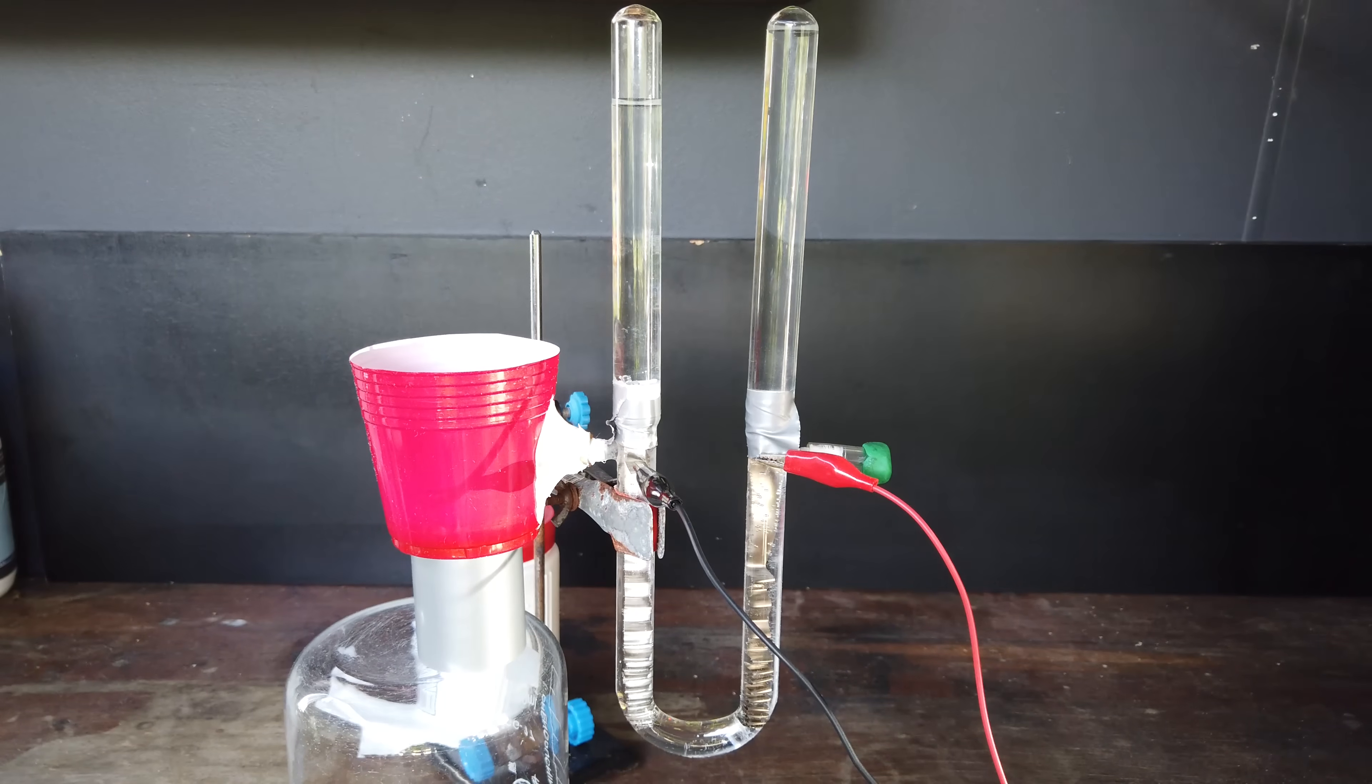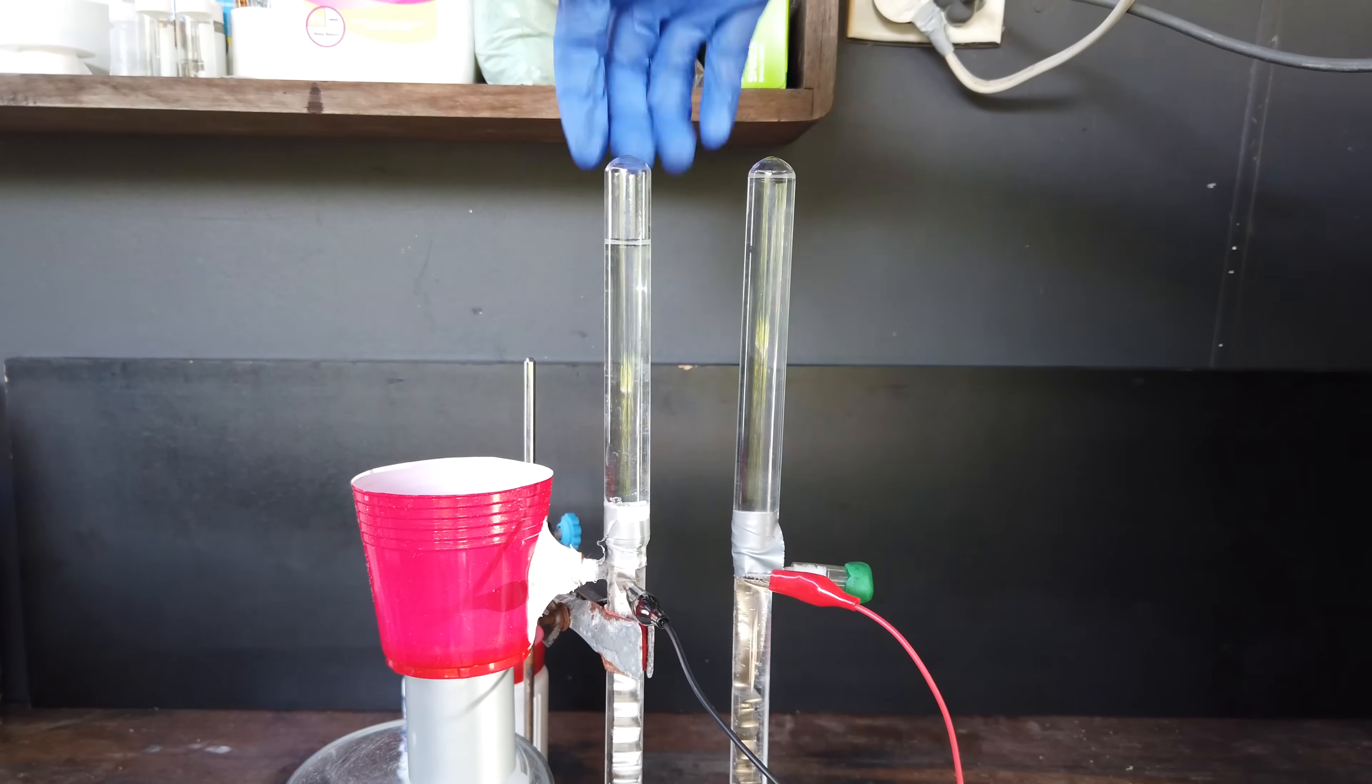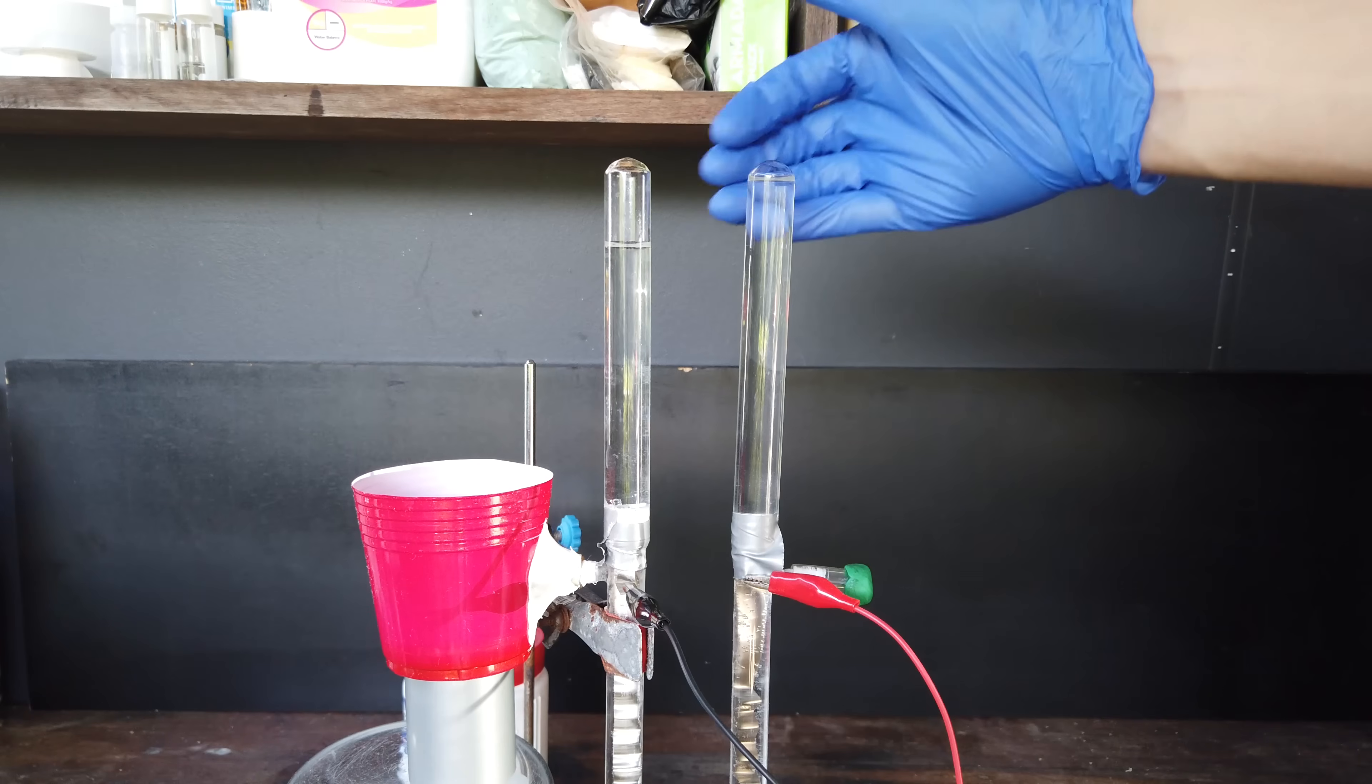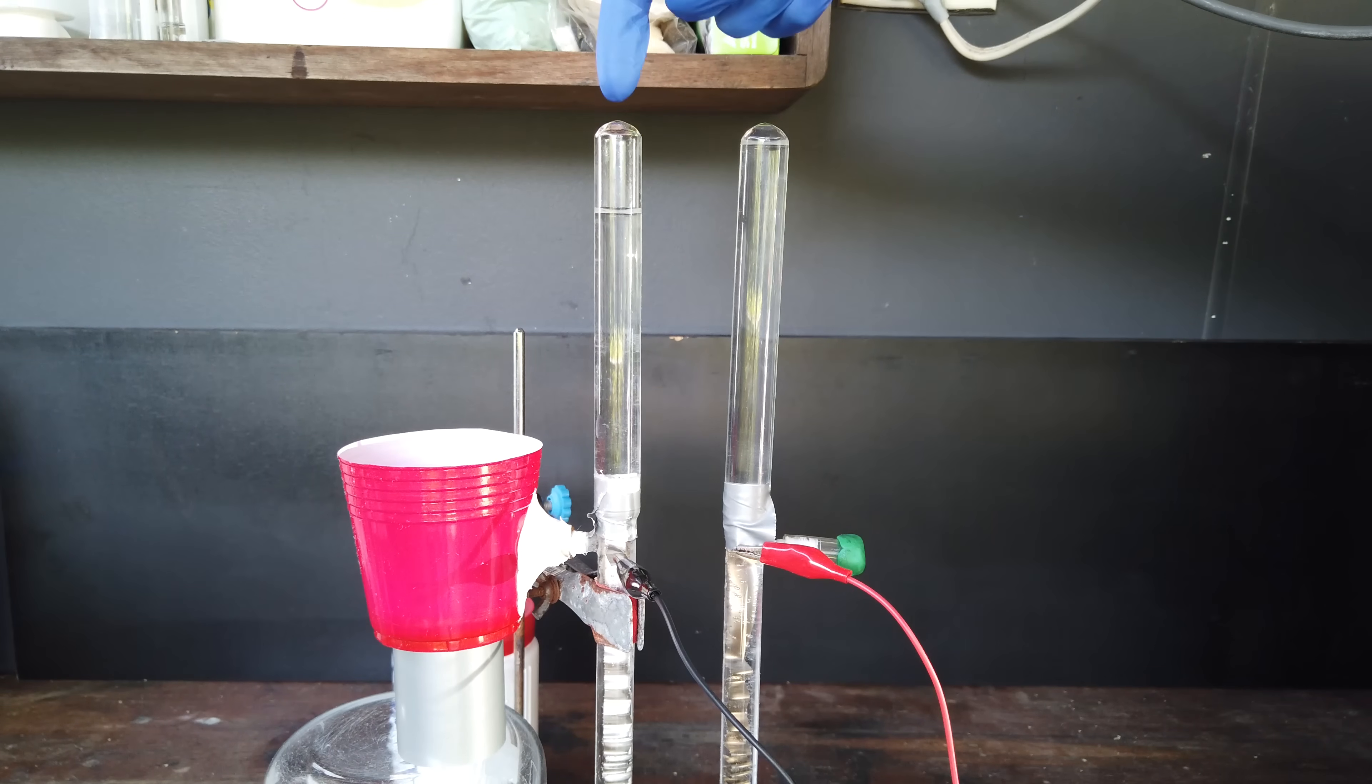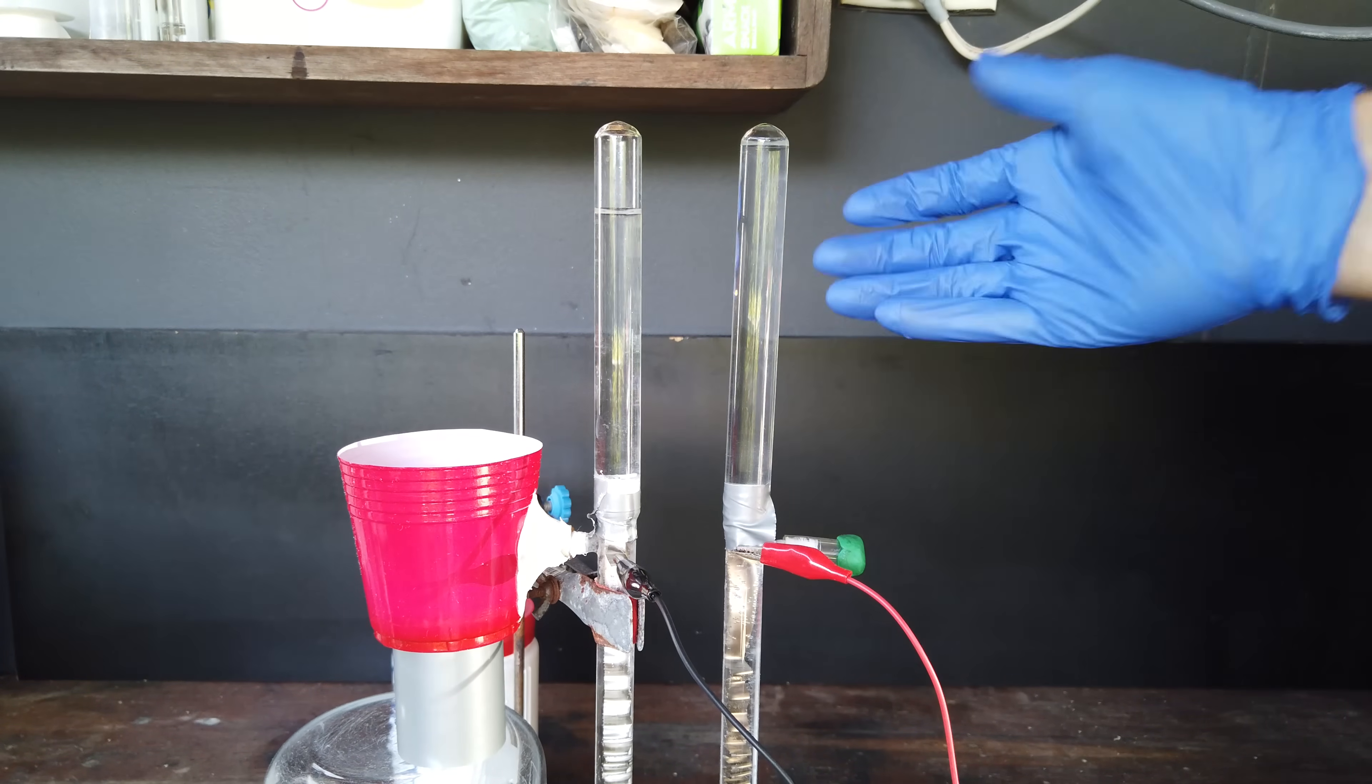So yes, after 24 hours of electrolysis, we have made this much hydrogen. I'd call that maybe 5 to 10 milliliters. And then this much nitrogen, which you can barely see. The gases aren't quite in their 3 to 1 ratio. We expected to see 3 units of hydrogen and 1 unit of nitrogen after we completed our electrolysis.